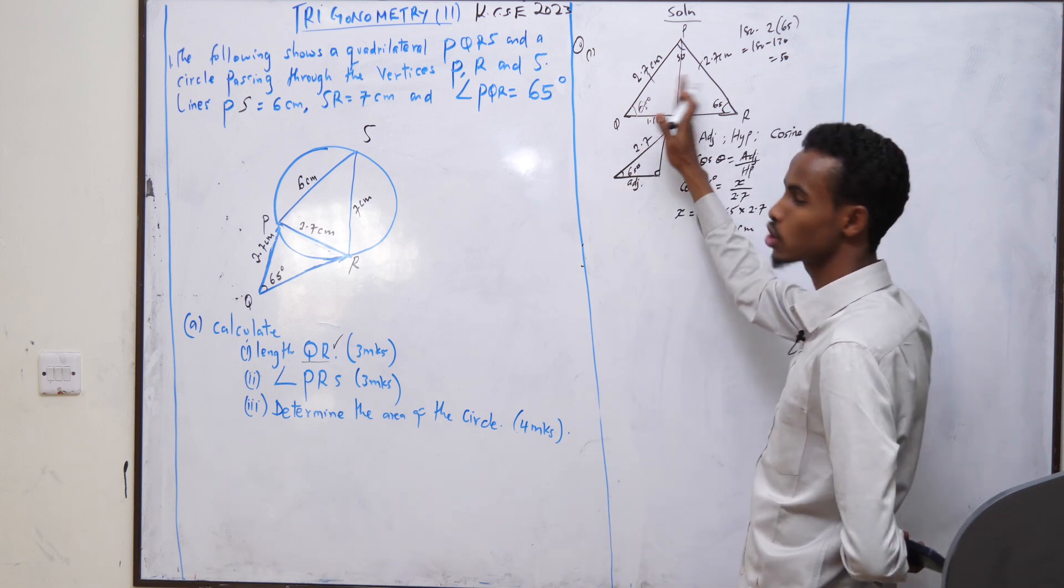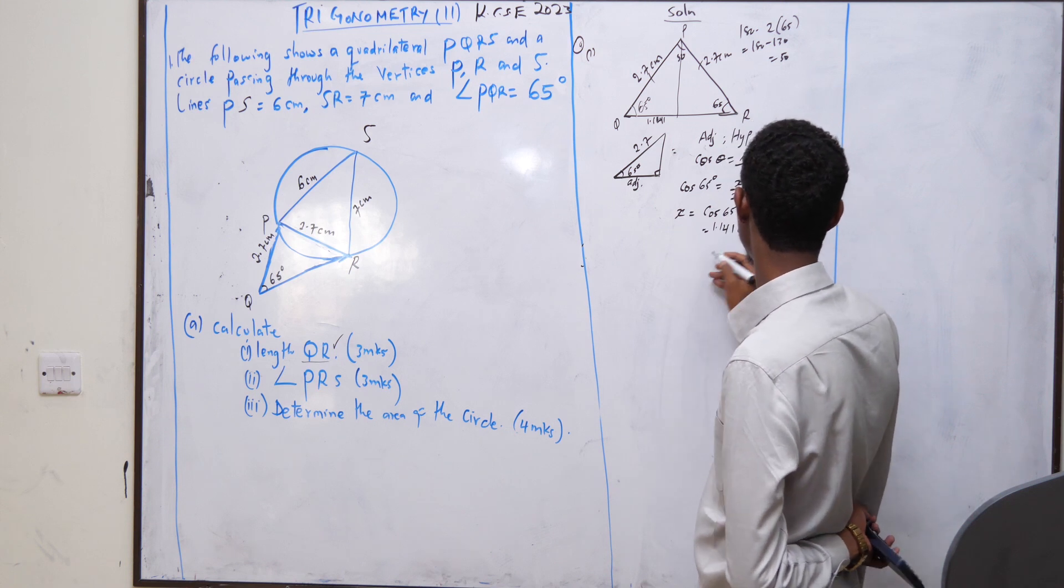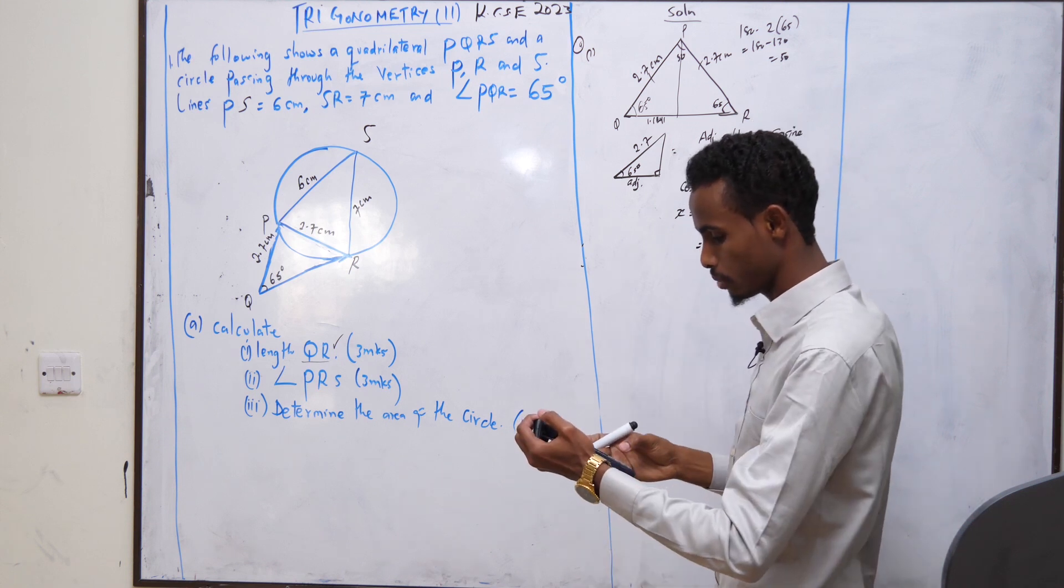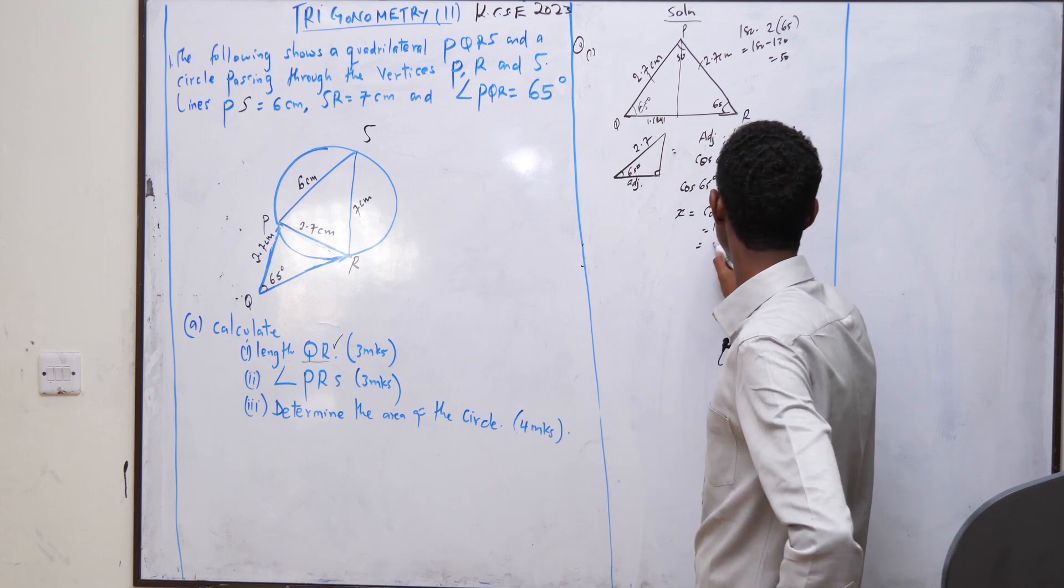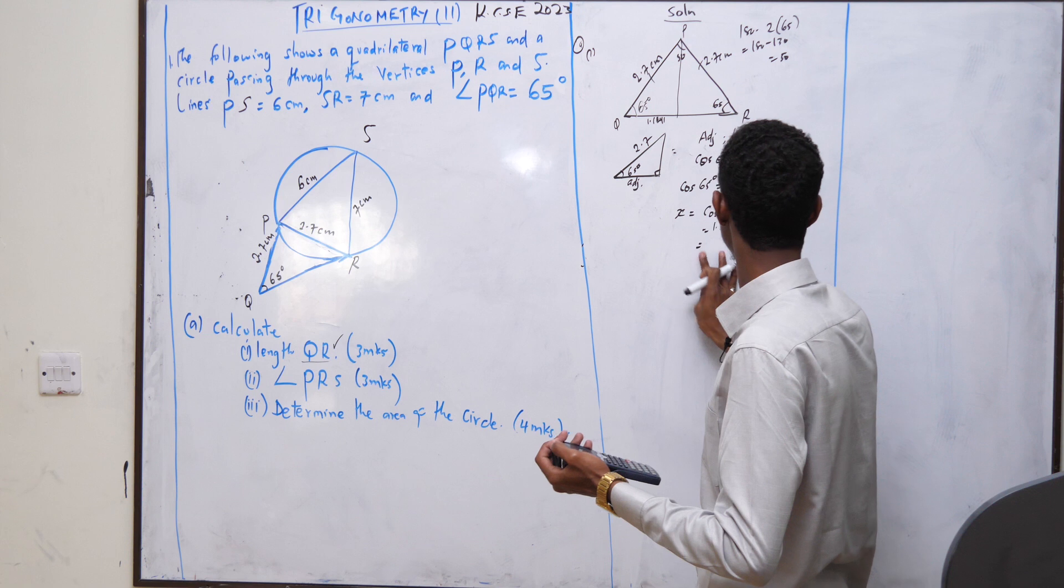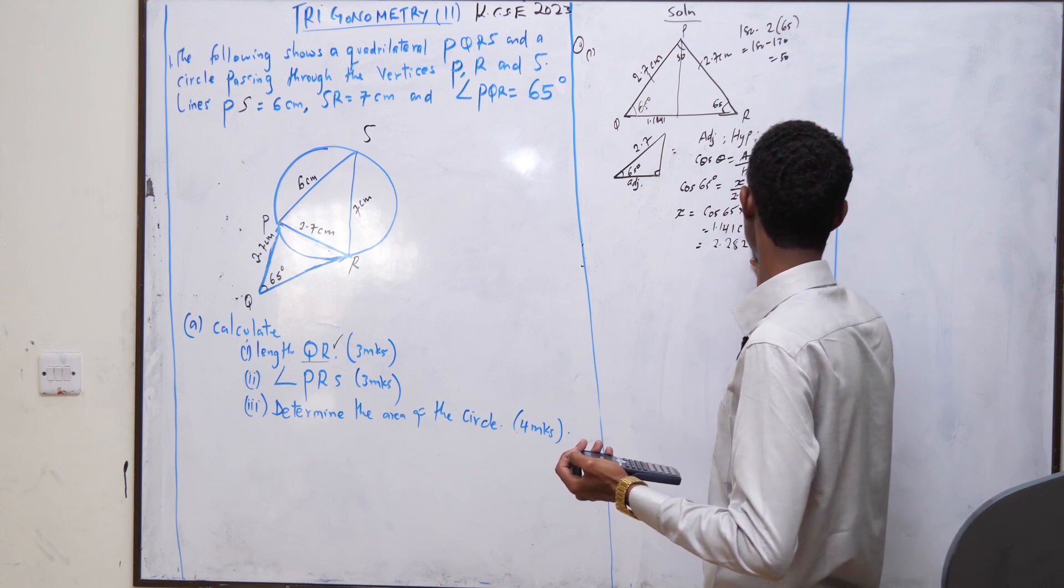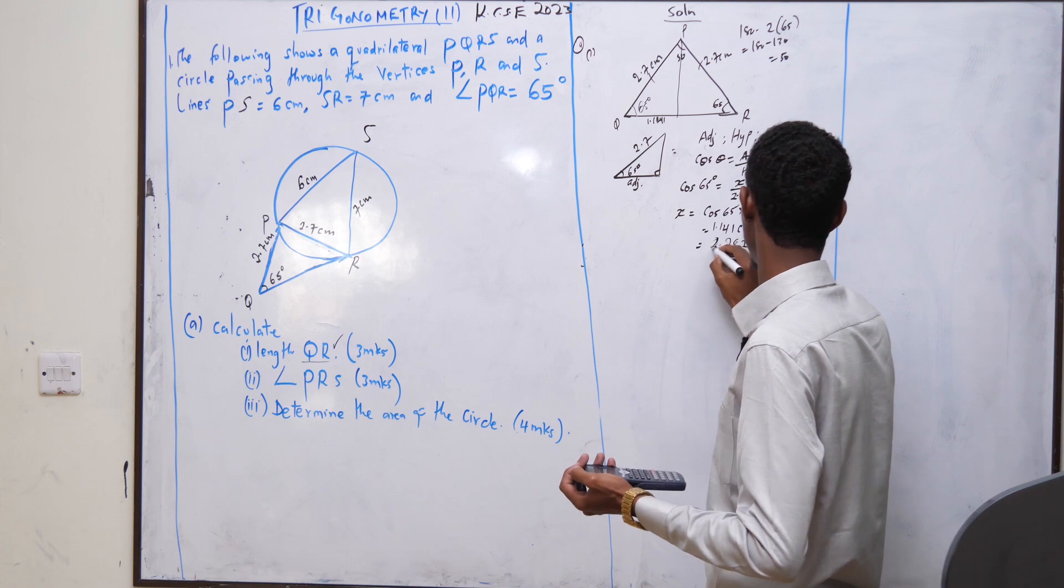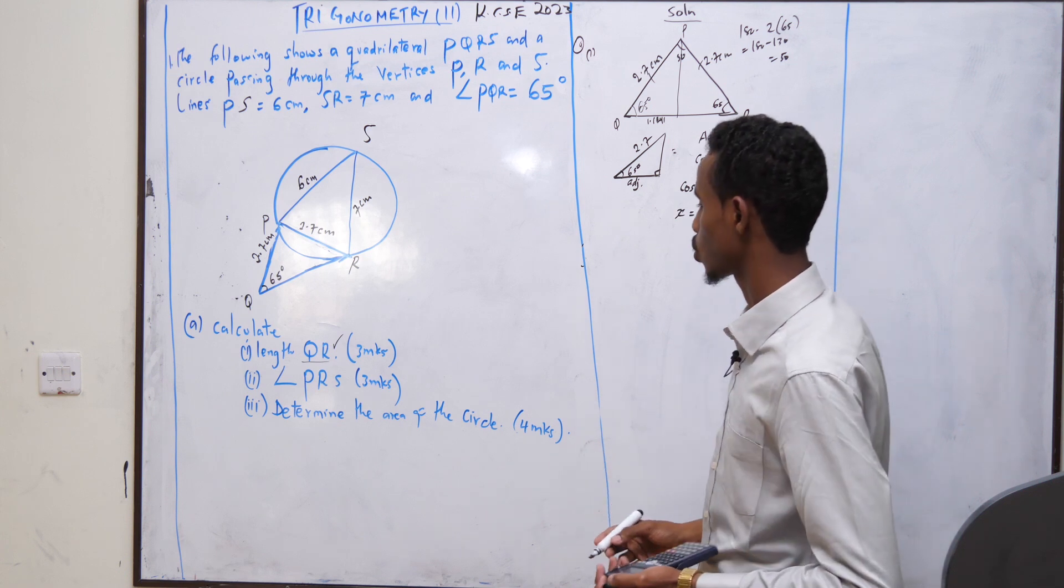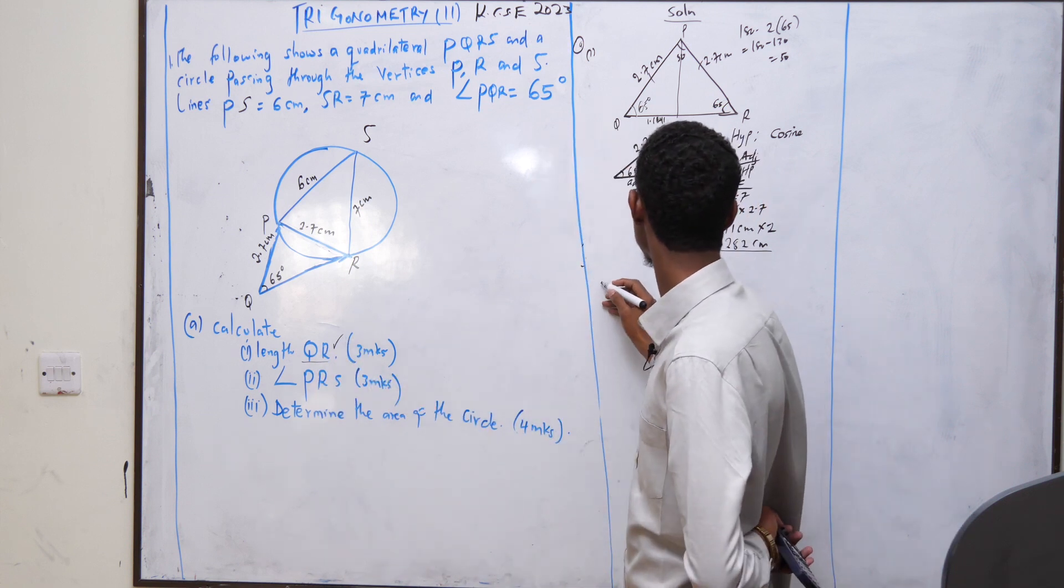Here it is 1.141 centimeters. We know this was divided into two halves. Therefore, it becomes multiplied by 2. It becomes 2.282 centimeters. And that is the answer to Roman 1.